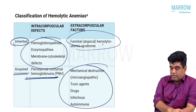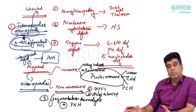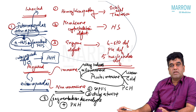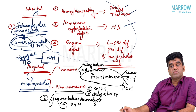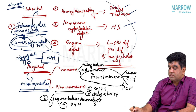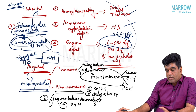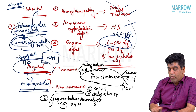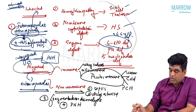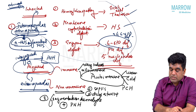Regarding intravascular versus extravascular: all inherited causes basically have extravascular hemolysis — sickle, thalassemia, hereditary spherocytosis all have extravascular hemolysis. The only exception is acute G6PD deficiency, where you can have intravascular hemolysis. All acquired causes — sepsis, drugs, toxins — basically have intravascular hemolysis. The only exception is autoimmune hemolytic anemia, where the predominant hemolysis is extravascular.